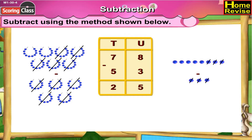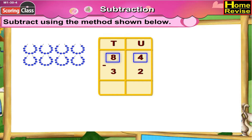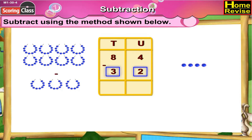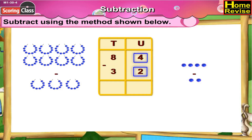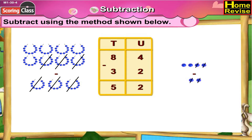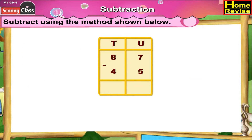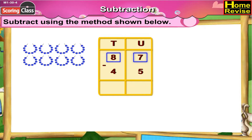So 78 minus 53 is 25. Next, 84 minus 32. If you put them as tens and units it is 8 tens 4 units minus 3 tens 2 units. 4 minus 2 is 2, 8 minus 3 is 5. So it is 5 tens 2 units, so 84 minus 32 is 52.